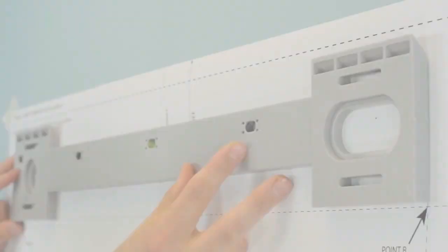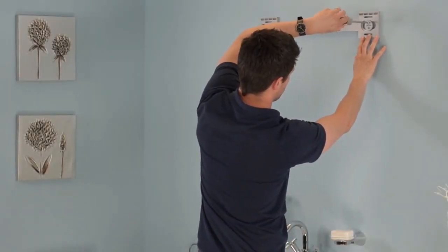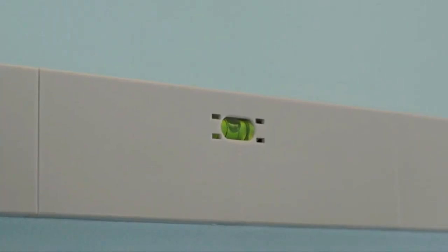Install the hang and lock bracket to the wall, making sure you leave the screws slightly loose, and use the built-in level to ensure that it is horizontal.